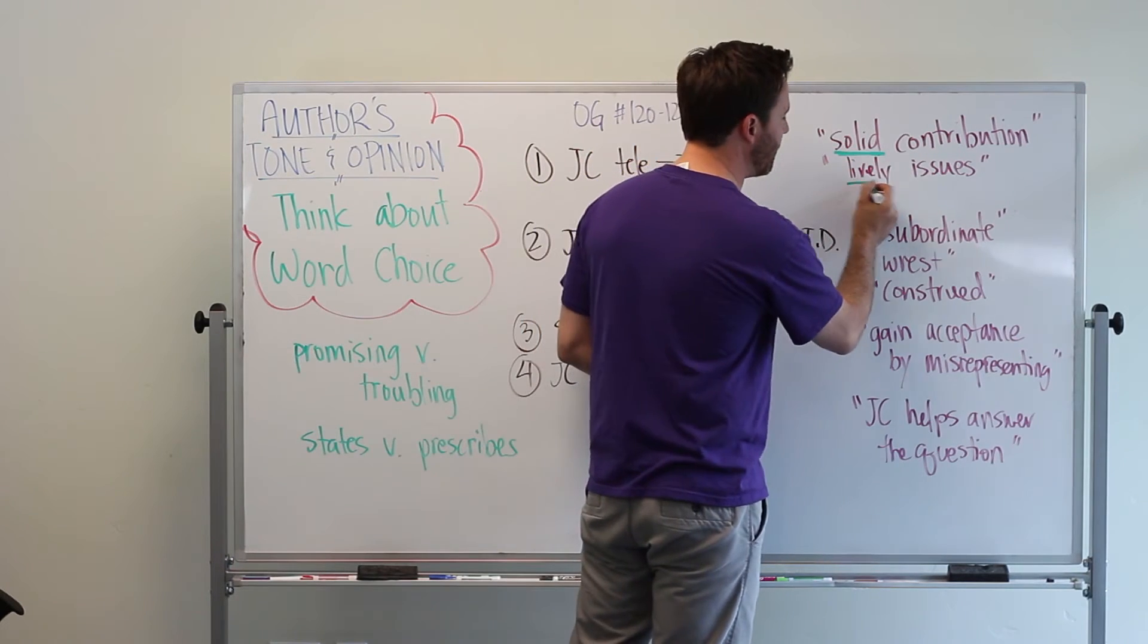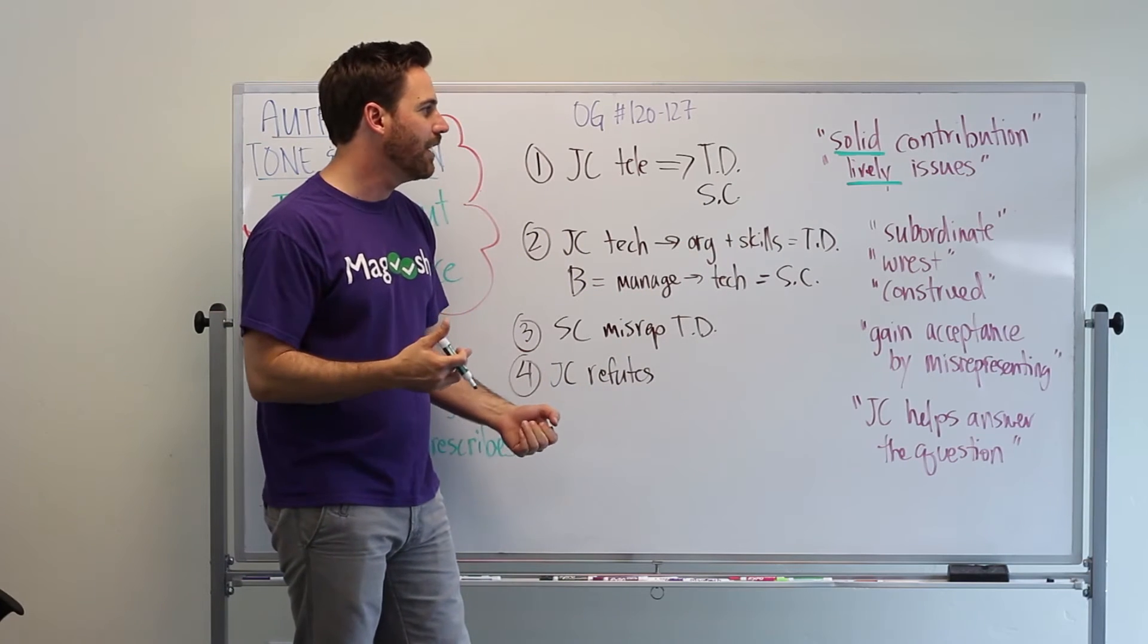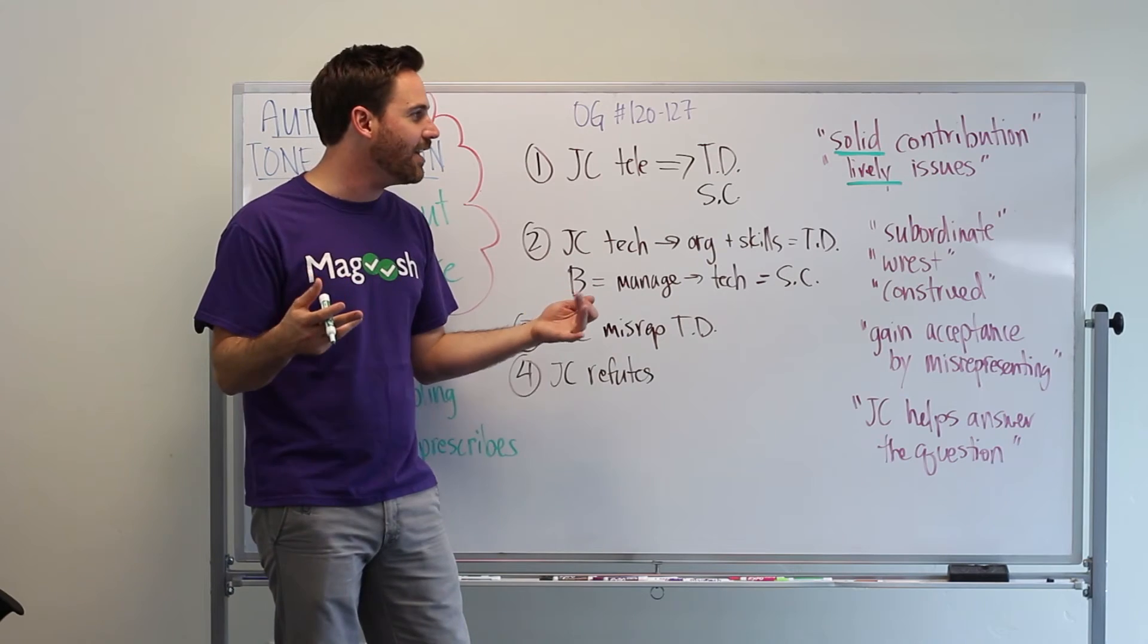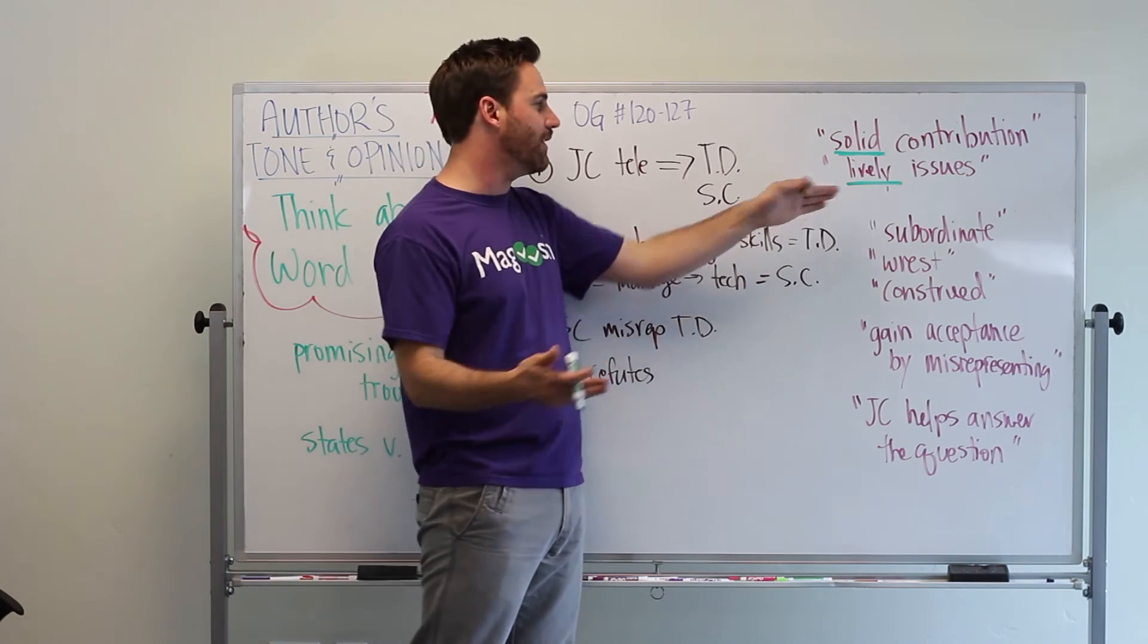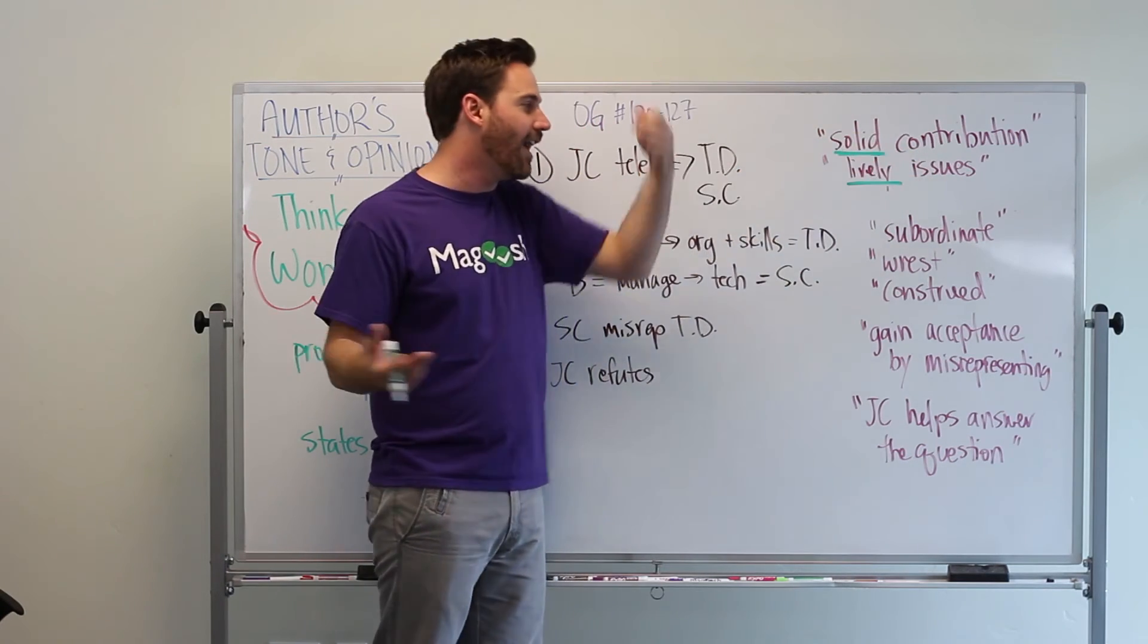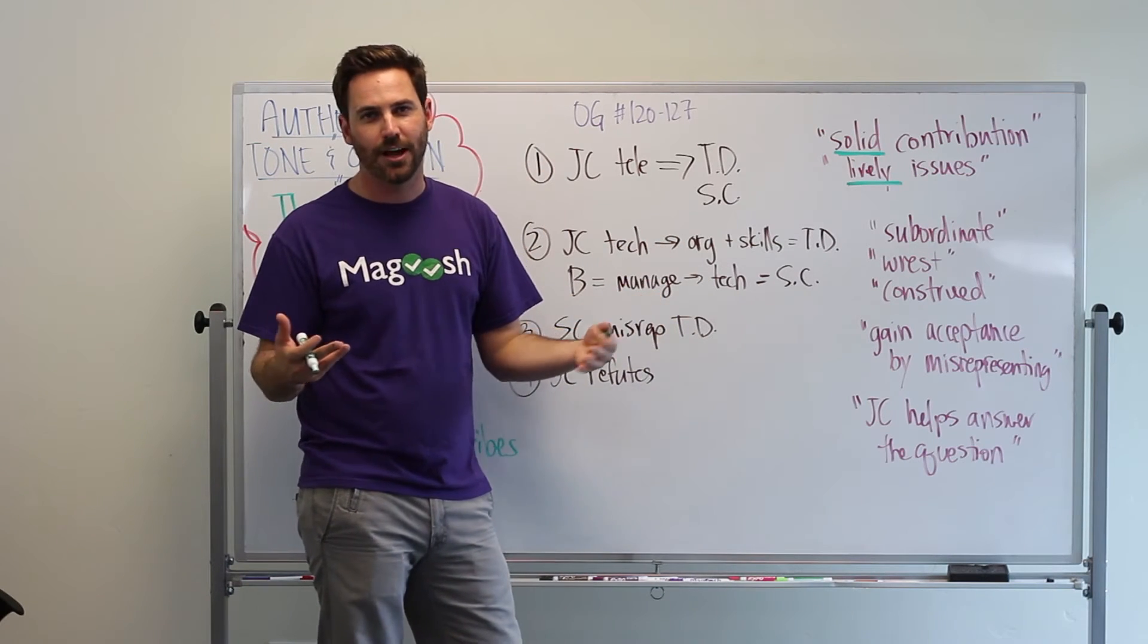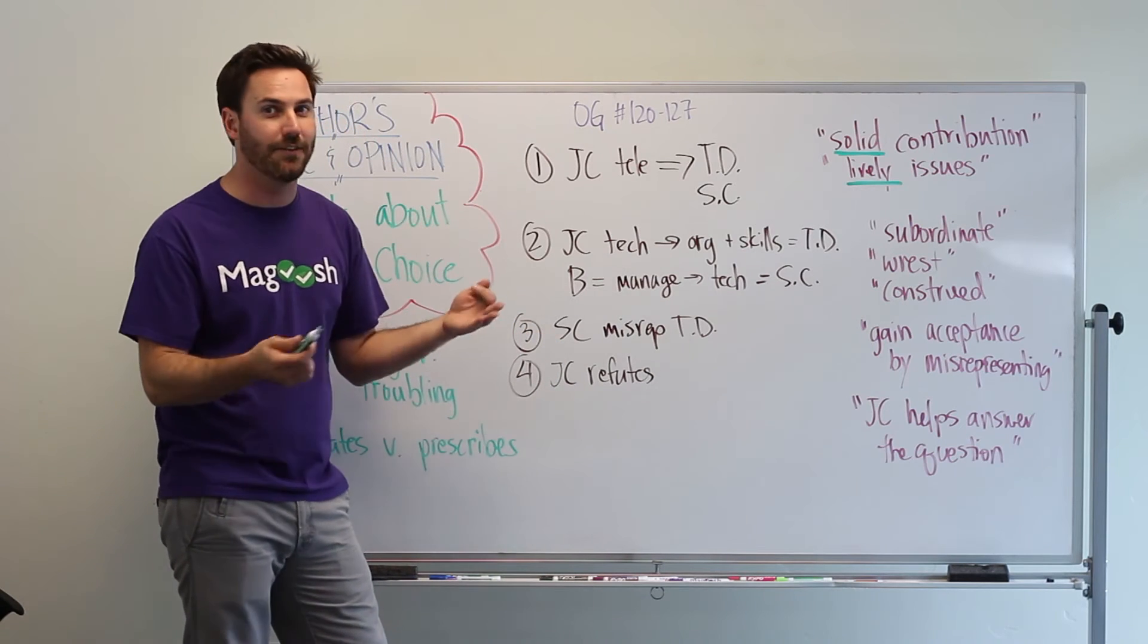Lively issues. Also, this is a very active adverb. It tells me that this is something that's exciting, and I feel I have positive associations with it. And the author did, too, when they chose this word, lively issues. They could have just said issues, they didn't have to say lively. So that tells me, too, that the author does care about this topic. And has a very positive feeling about JC.